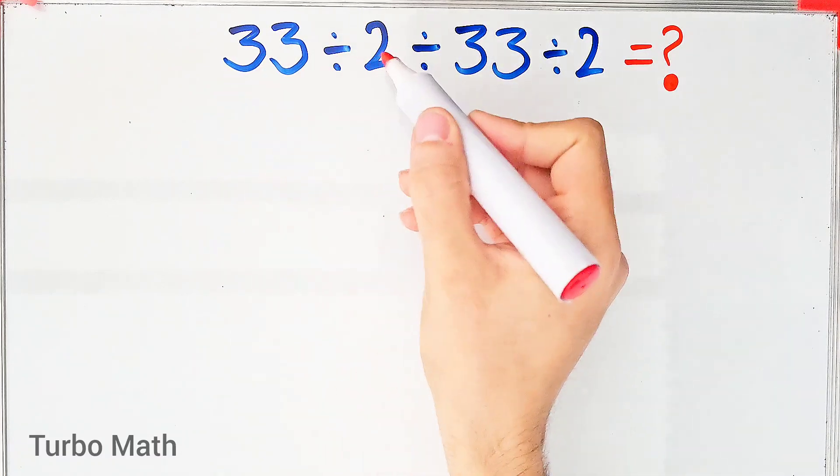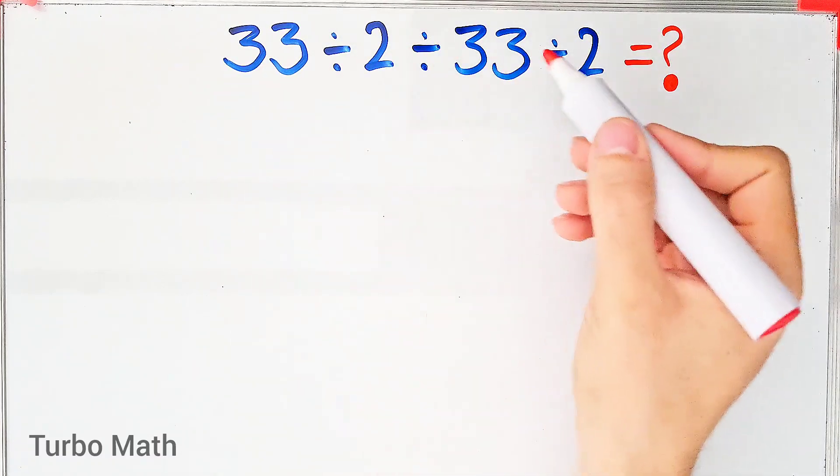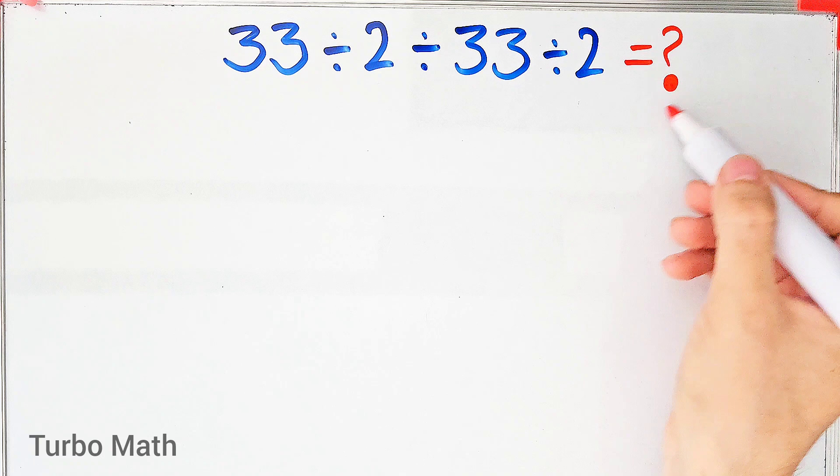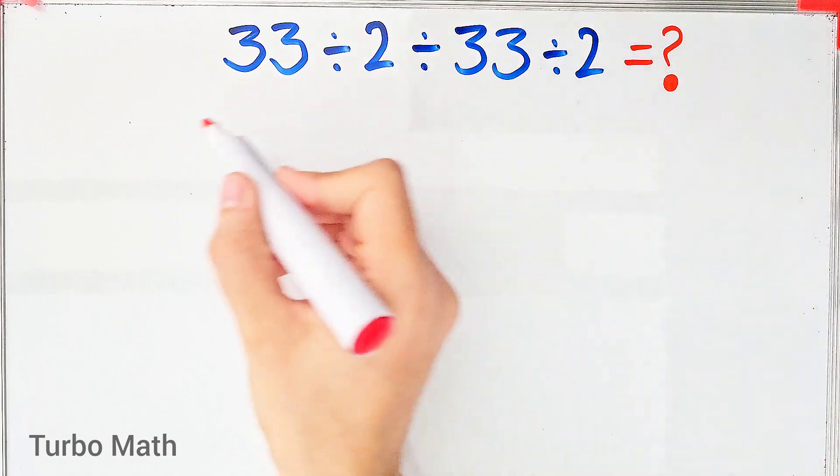33 divided by 2 then divided by 33 then divided by 2. What is the answer of this question? Can you solve it?